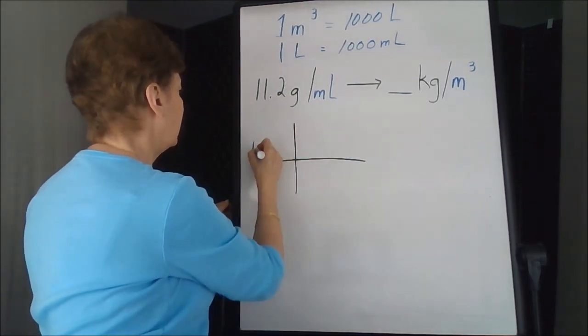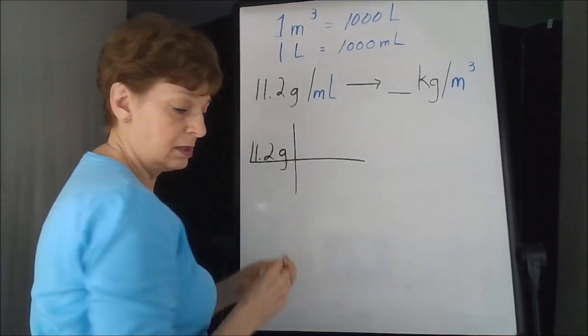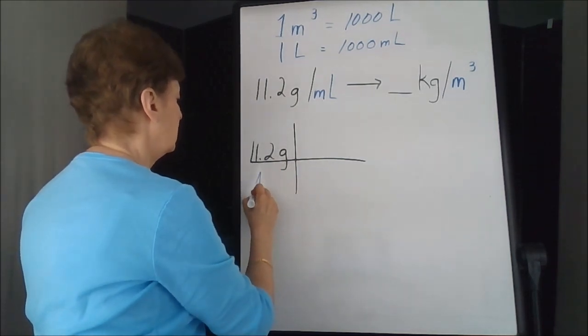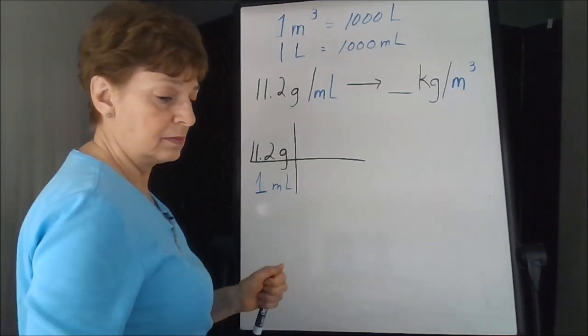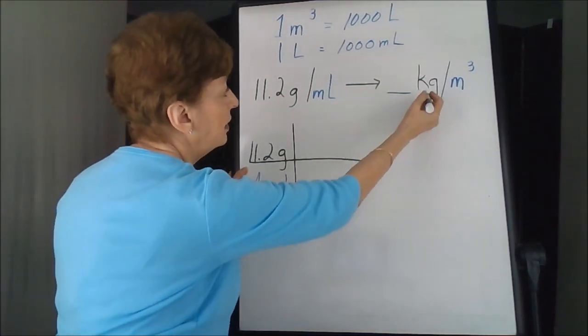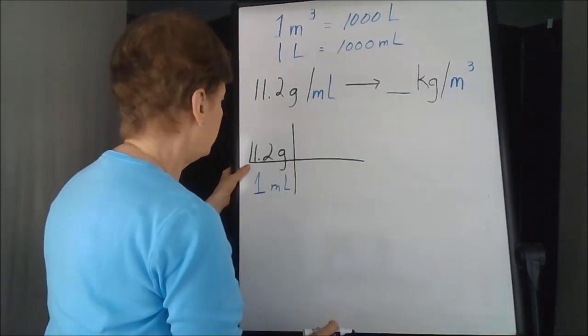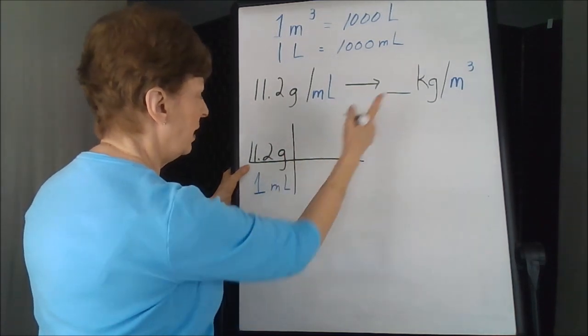We have 11.2 grams per one milliliter, and we need kilograms and meters cubed, so let's try to get rid of our grams and make them into kilograms.